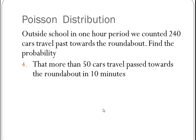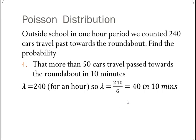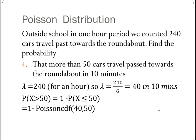And my last one is the probability that more than 50 cars travel past in the next 10 minutes, so my lambda is still 40 in 10 minutes. I've now got probability that x is greater than 50, and that is going to be the same as doing 1 minus probability x is less than or equal to 50, because more than 50 does not include 50. So that's 1 minus a Poisson distribution of 40, 50, which is 1 minus 0.9474.